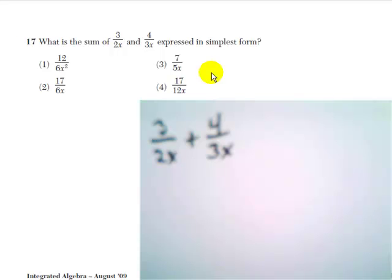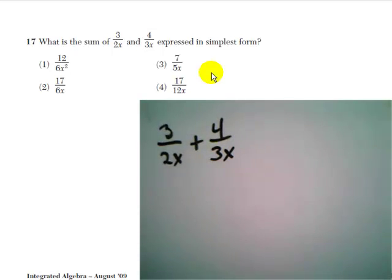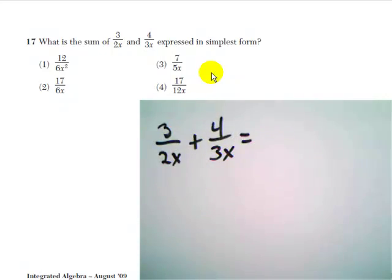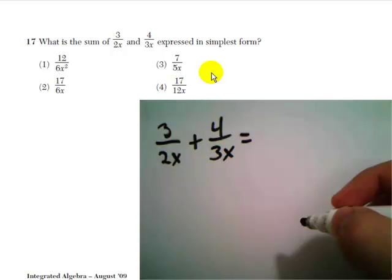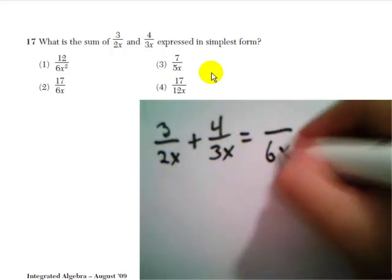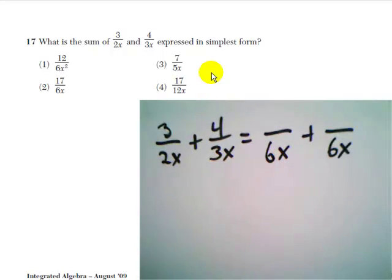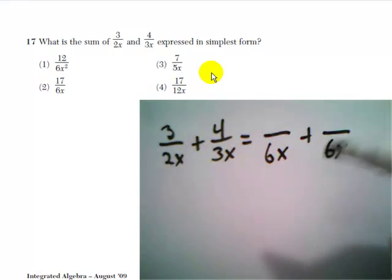We need a common multiple for 2x and 3x, because when we add fractions, we need a common denominator. The simplest way to go about it is to use 6x, because 2x goes into 6x 3 times, and 3x goes into 6x 2 times.